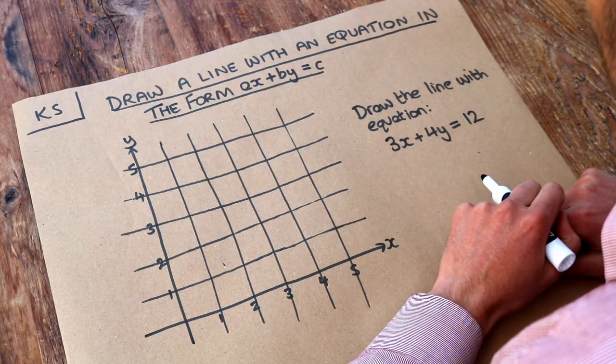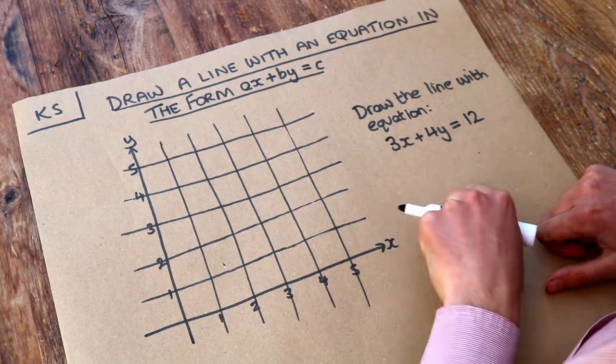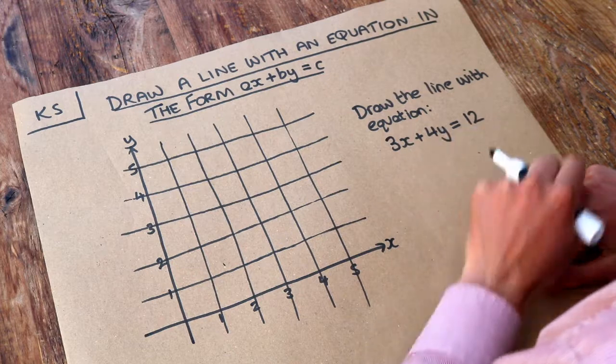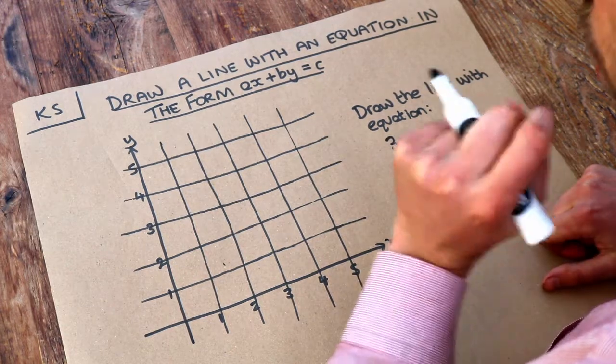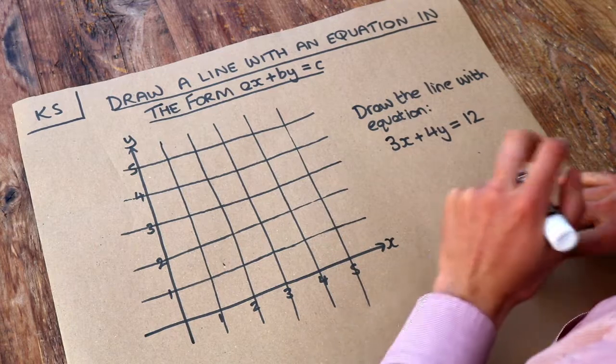What's the best way to get points for this? If you have an equation in this particular form where we have something x plus something y equals something, the best way is to see what happens when y is zero and when x is zero.